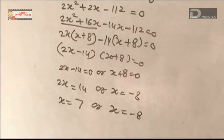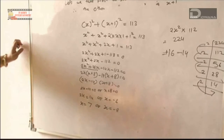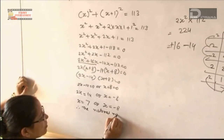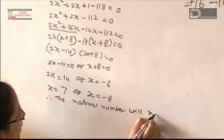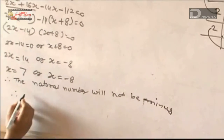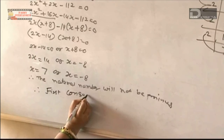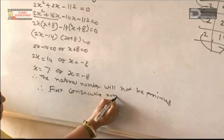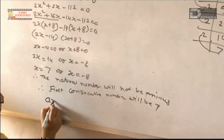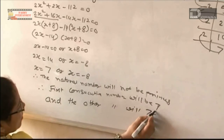Now we substitute the values. Since we are looking for natural numbers, x cannot be minus 8 — natural numbers will not be negative. Therefore the first consecutive number will be 7, and the other number will be 7 plus 1, which equals 8.